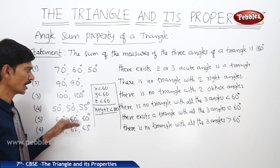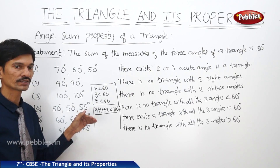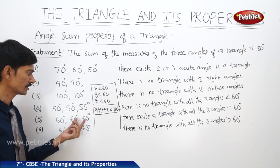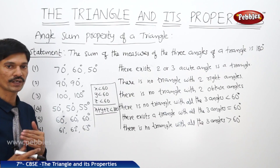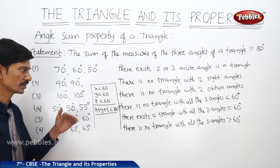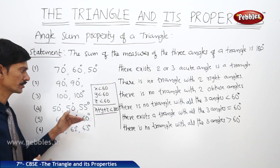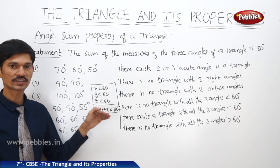When you take all three angles as 60 degrees, then 60 plus 60 plus 60 is 180 degrees. So there is a triangle with all three angles equal to 60 degrees.